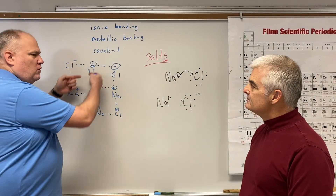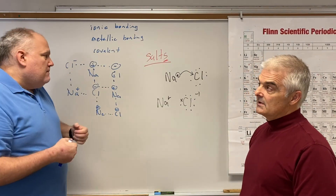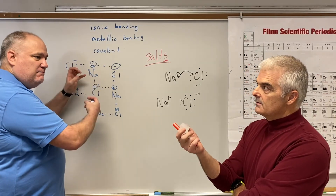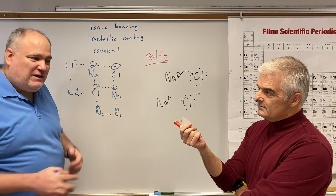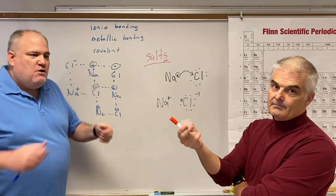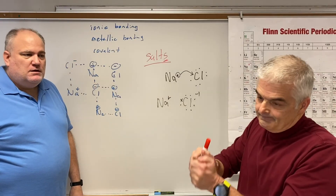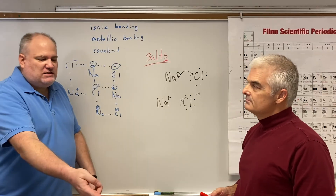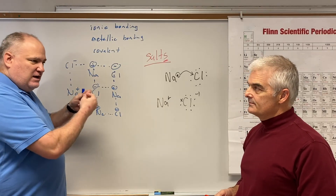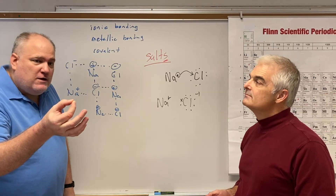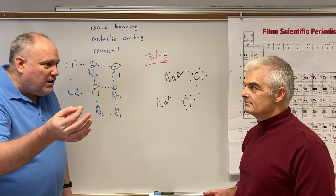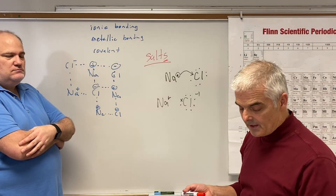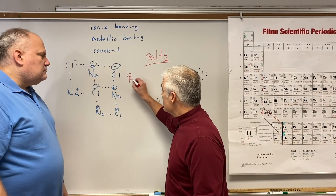When these ions hold onto each other, they hold on very, very tightly. To separate or move them, you have to actually break bonds, which means all salts are really, really brittle. You could smash a piece of salt, but you can't bend it to your will — it will never bend. So most ionic compounds are brittle.